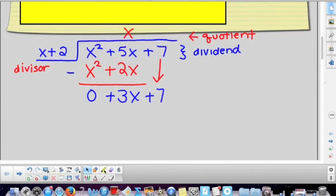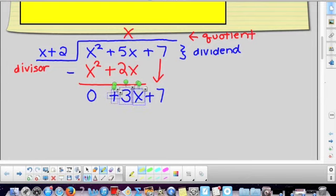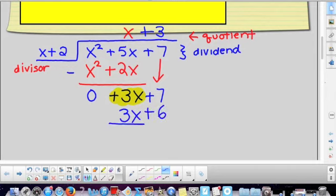So now you're going to really focus. The key on this is to focus on the first term. I want to focus on my positive three x. What do I have to multiply x plus two by in order to get positive three x? x times, I'm going to use positive three to eliminate this positive three x because three times x gives me three x and three times two is positive six. So now when I subtract, I get zero plus one.